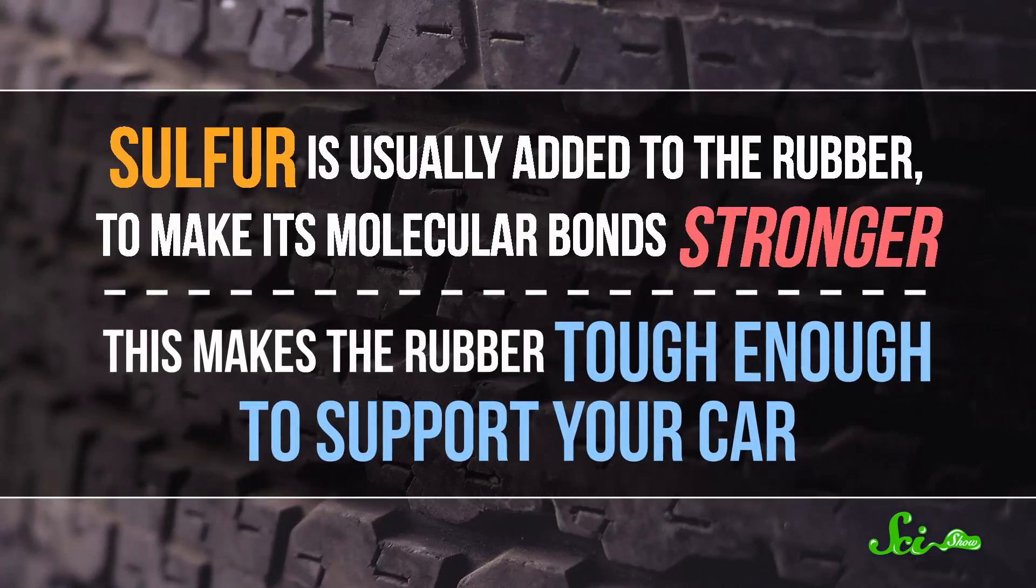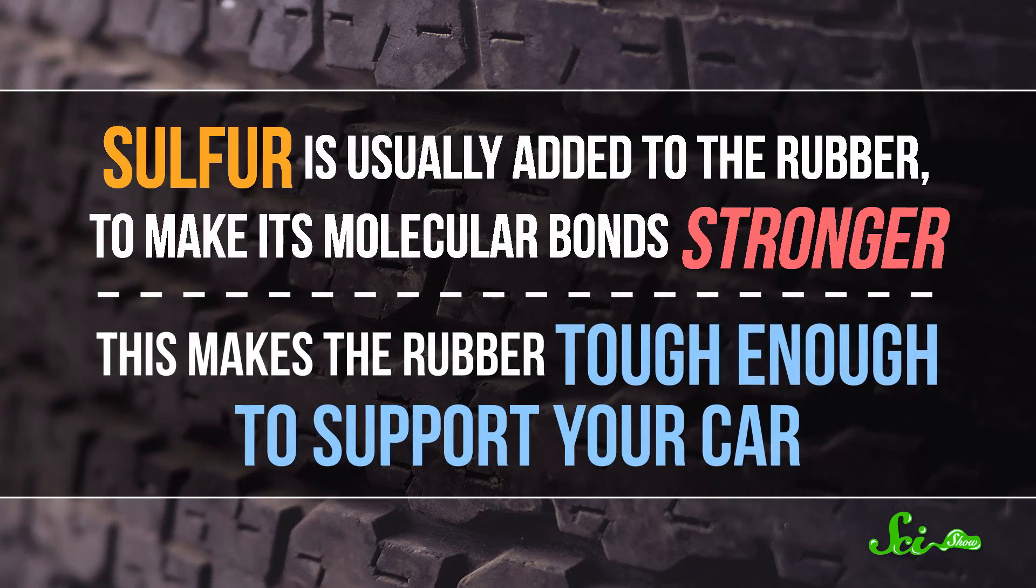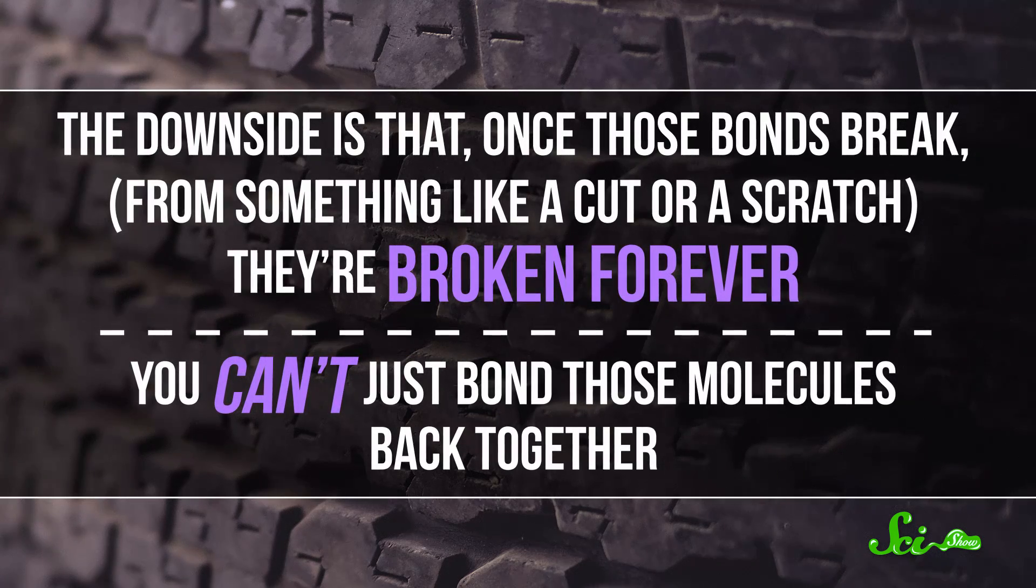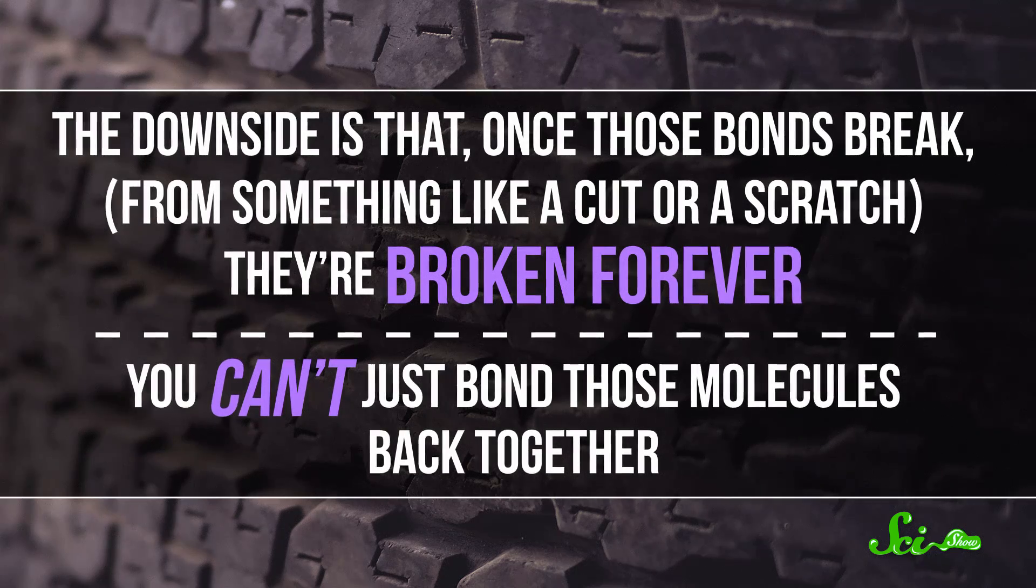Tires, as it turns out, aren't just pure rubber. Instead, sulfur is usually added to the rubber to make its molecular bonds stronger. This makes the rubber tough enough to support your car. The downside is that once those bonds break, from something like a cut or a scratch, they're broken forever. You can't just bond those molecules back together.